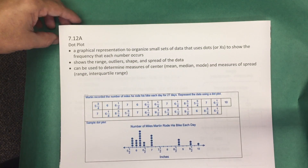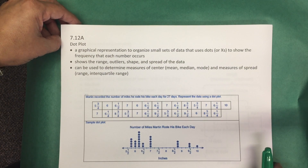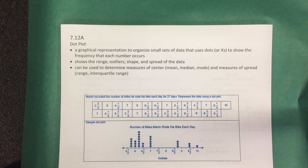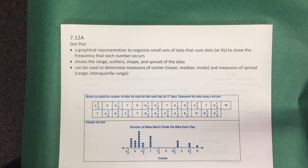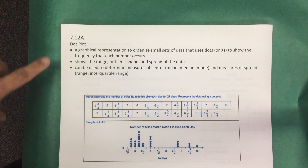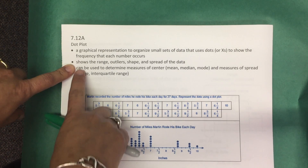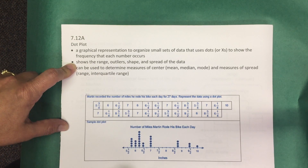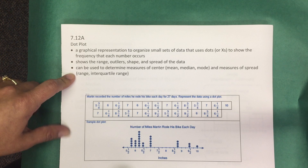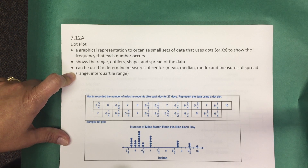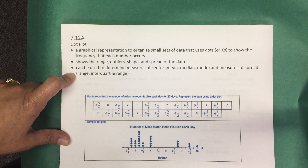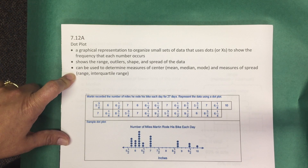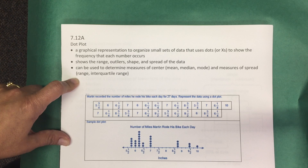First, let's talk about a dot plot. A dot plot is a graphical representation used to organize small sets of data that uses dots or x's to show the frequency that each number occurs. From a dot plot you can usually see the range, outliers, shape, and spread of the data. You can also use it to determine measures of center — mean, median, and mode — and measures of spread, which is the range and interquartile range.